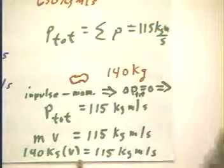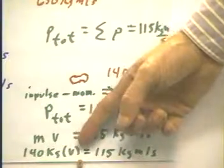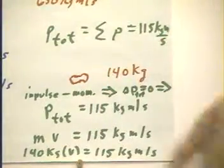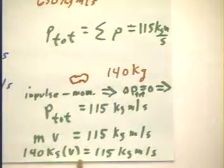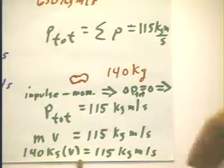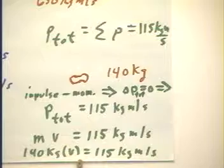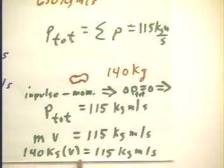The mass is 140 kilograms multiplied by V, which gives us 115 kilogram meters per second, and we can easily determine V. If we divide 115 by 140, we get something a little less than 6/7ths, which gives us a little over 0.8, or around 0.8 meters per second.